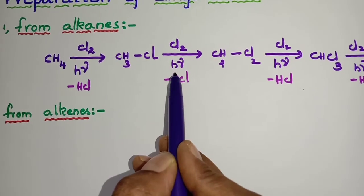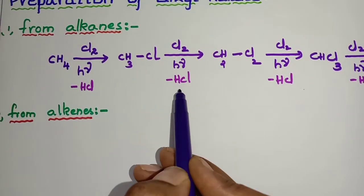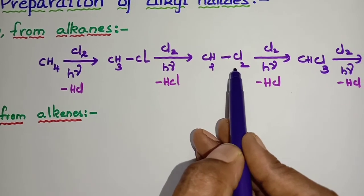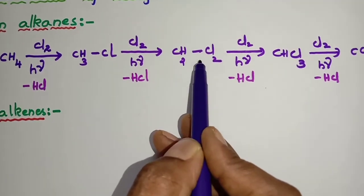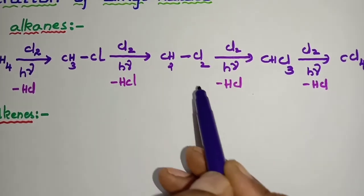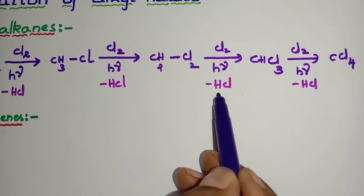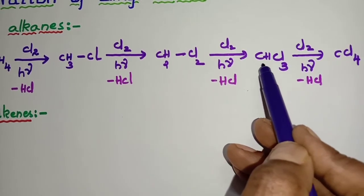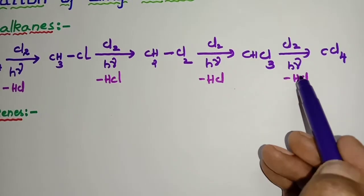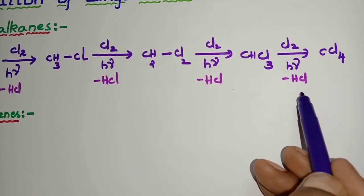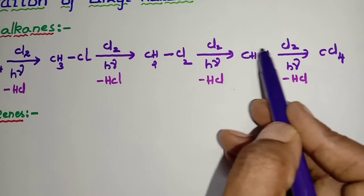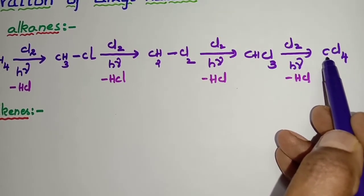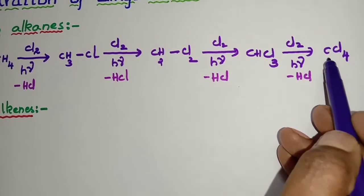On further chlorination, again in the presence of light, one hydrogen and one chlorine comes out as HCl and the hydrogen's place is substituted by a chlorine atom. Thereby we get CH2Cl2, called dichloromethane or methylene chloride. On further chlorination in presence of light, one more hydrogen and chlorine come out as HCl, giving chloroform or trichloromethane, CHCl3. On yet further chlorination, all the hydrogens in methane are replaced by chlorine, giving carbon tetrachloride or tetrachloromethane, CCl4.